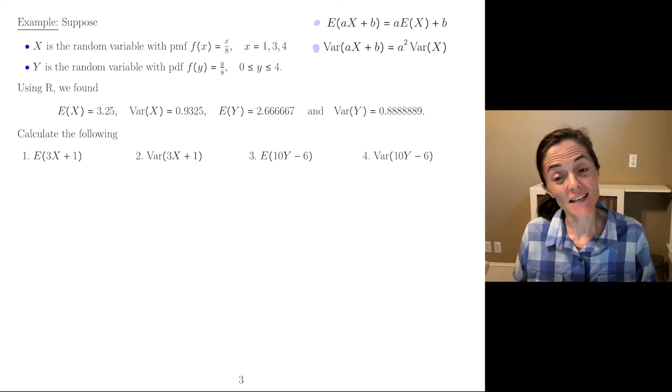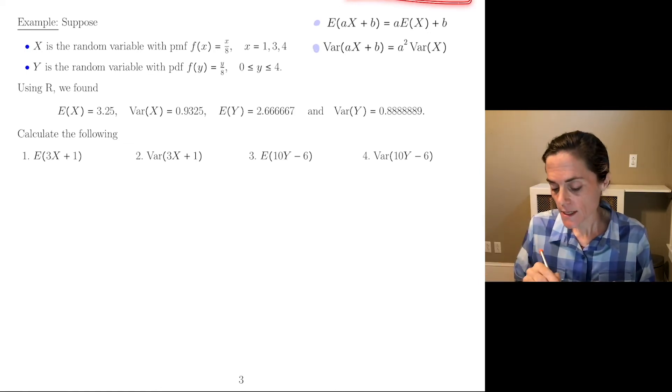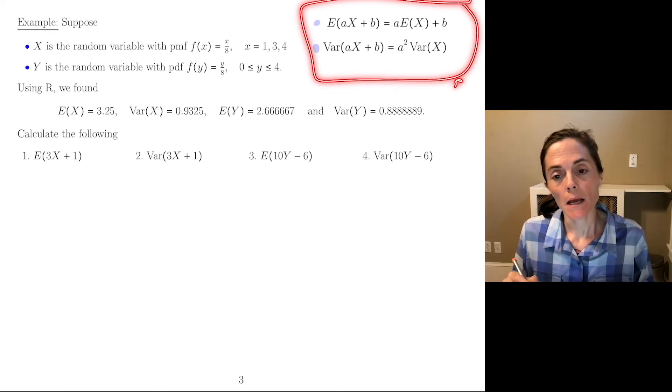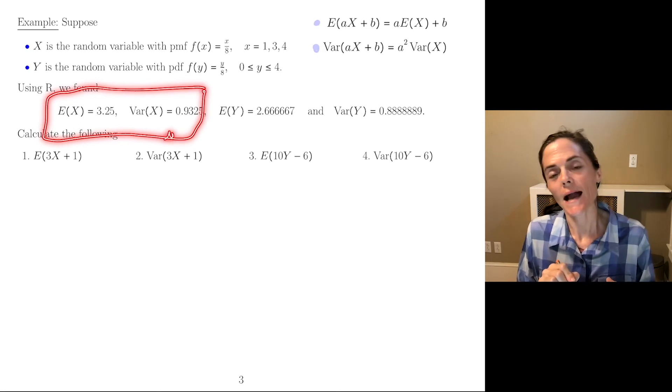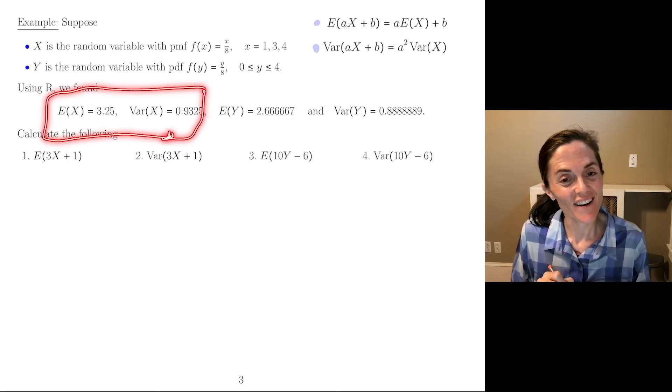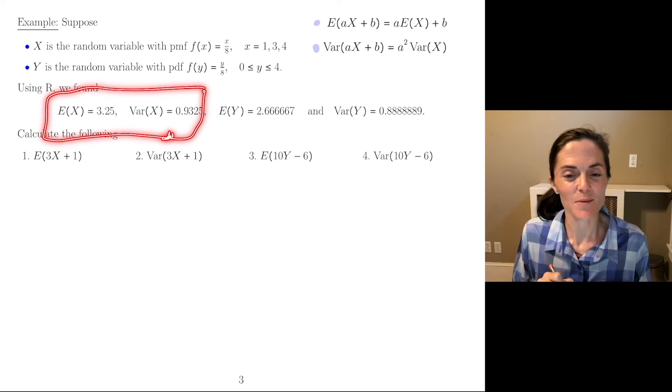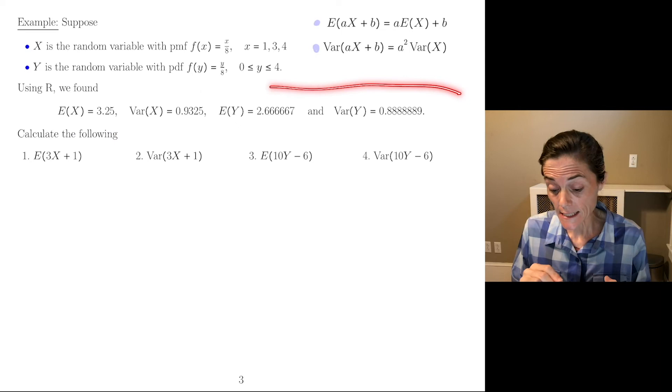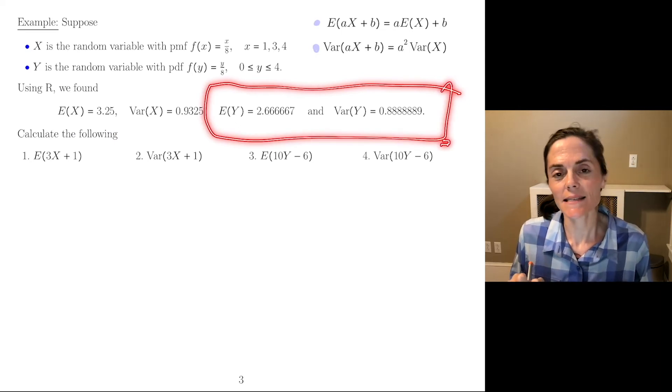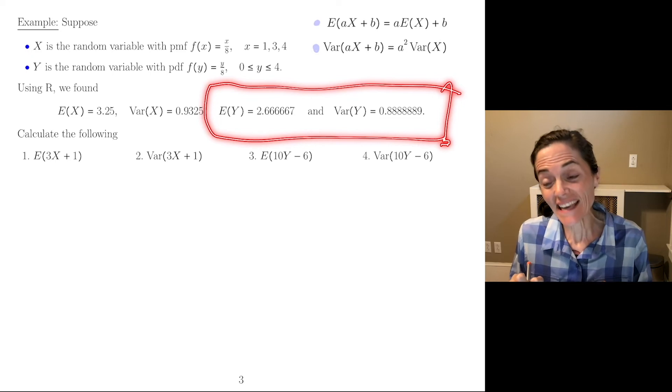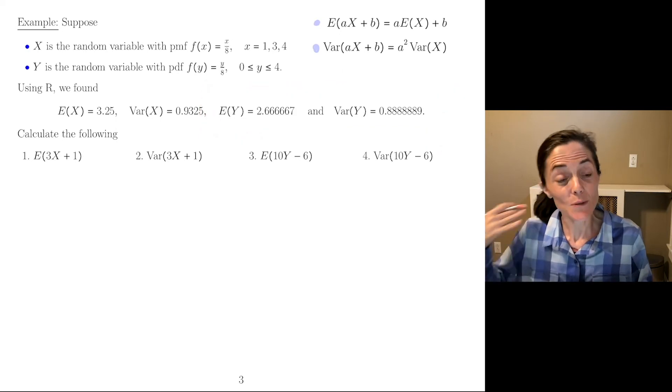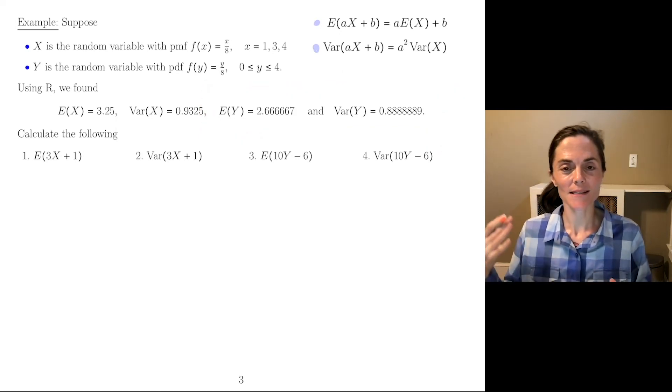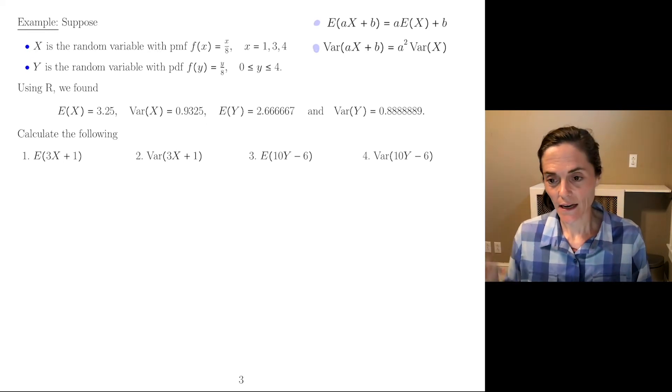So the statement on variance. The variance of AX plus B is A squared times the variance of X. Here's one example continuous, one example discrete using both of these equations in this theorem. We have seen both of these random variables. In particular, for X, this discrete random variable, we practice learning how to calculate expected value and variance in R for this example. And these are the numbers we got. Moreover, for this continuous random variable Y, we practice calculating mean and variance for continuous random variable in R. And these are the values we got. If you didn't do that, go back and practice. It's an important skill inside R.